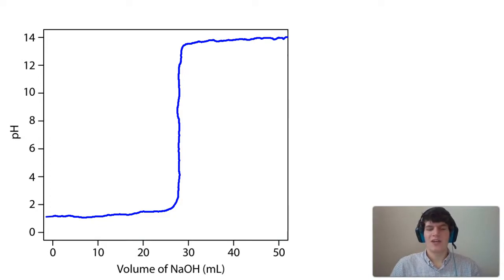And the equivalence point is going to occur during this steep part of the titration. And the way we can figure out the equivalence point is by using an indicator. The indicator should change colors as soon as we've added enough base to reach the equivalence point. So in order for that to happen,